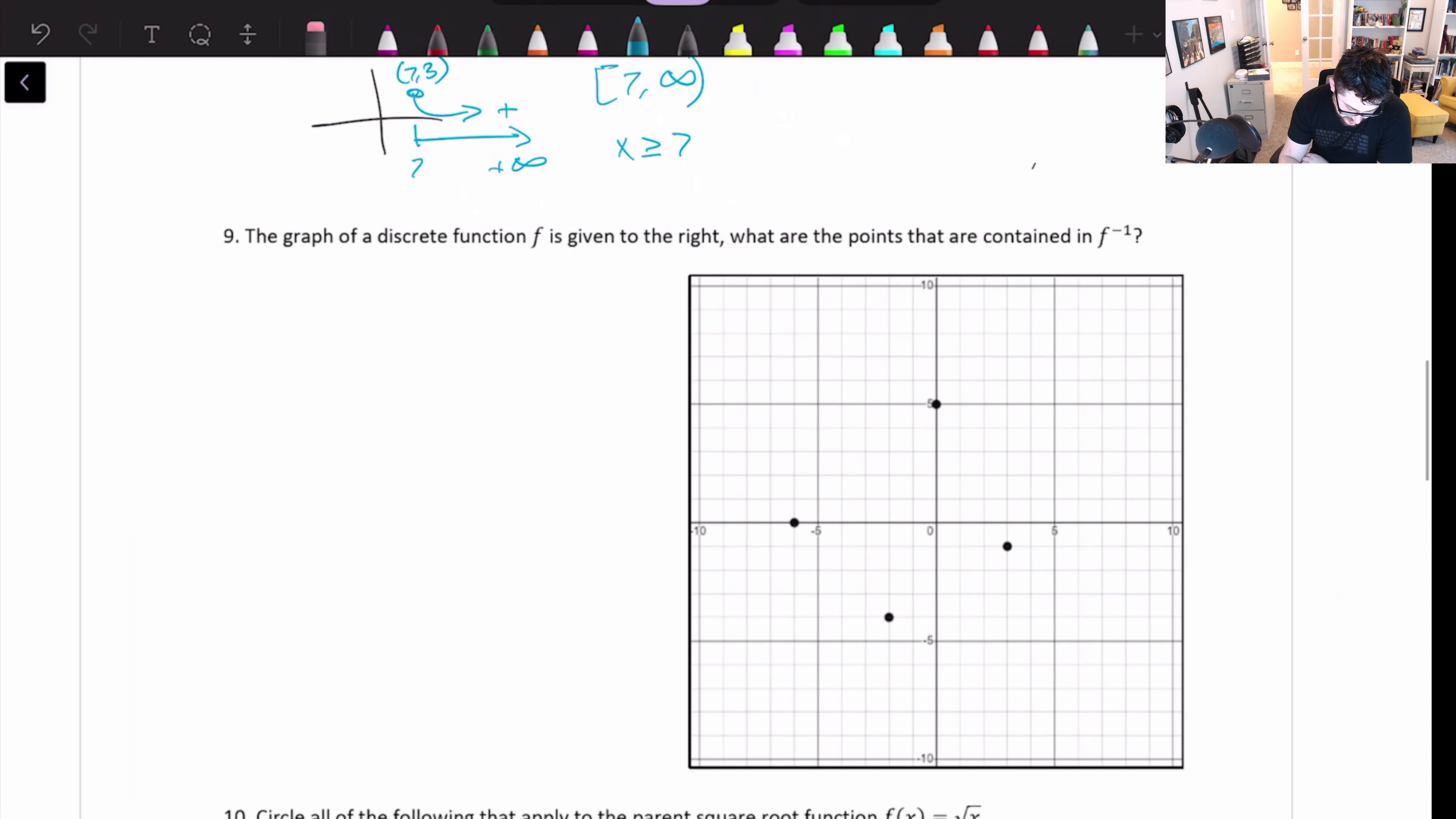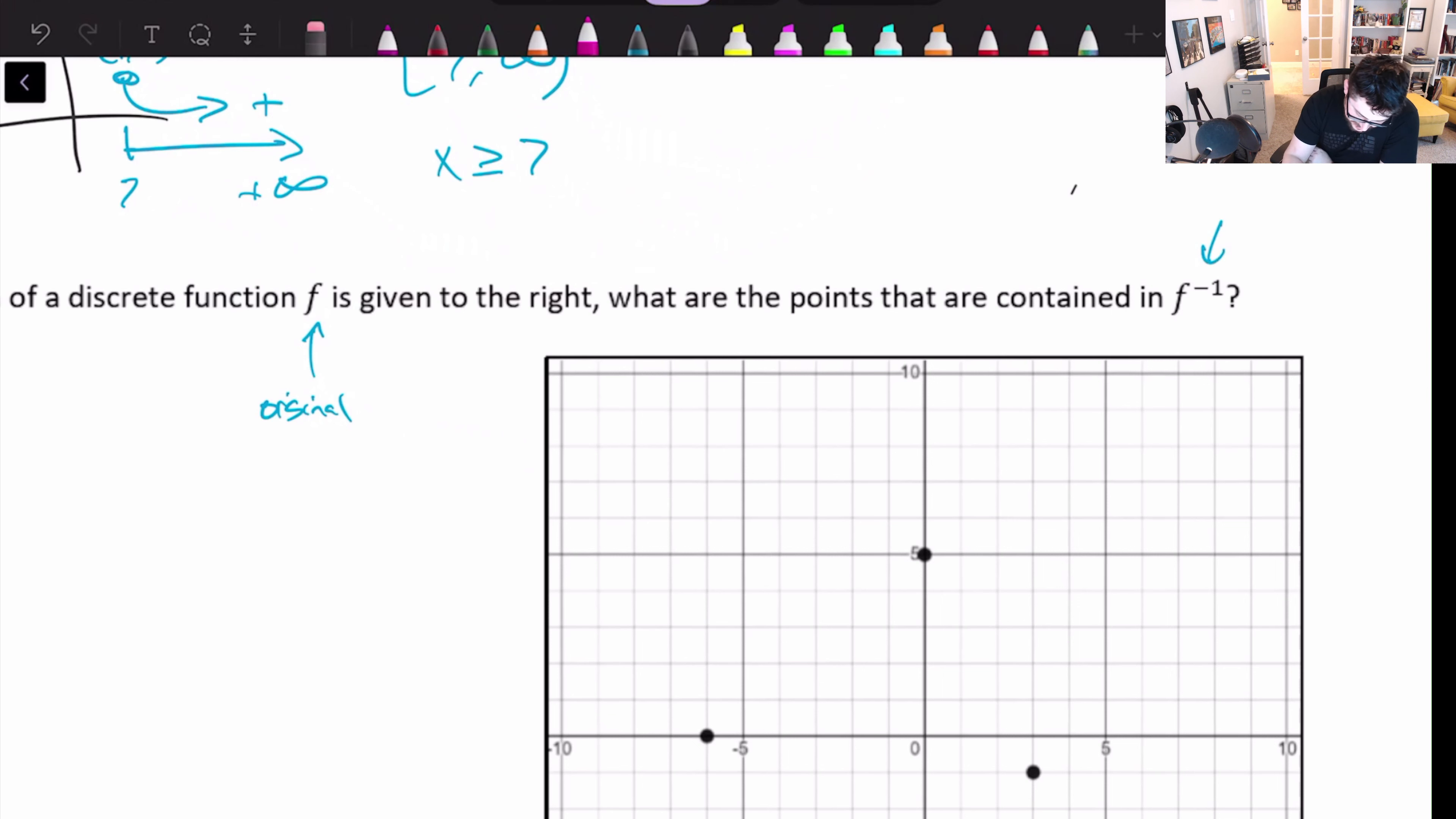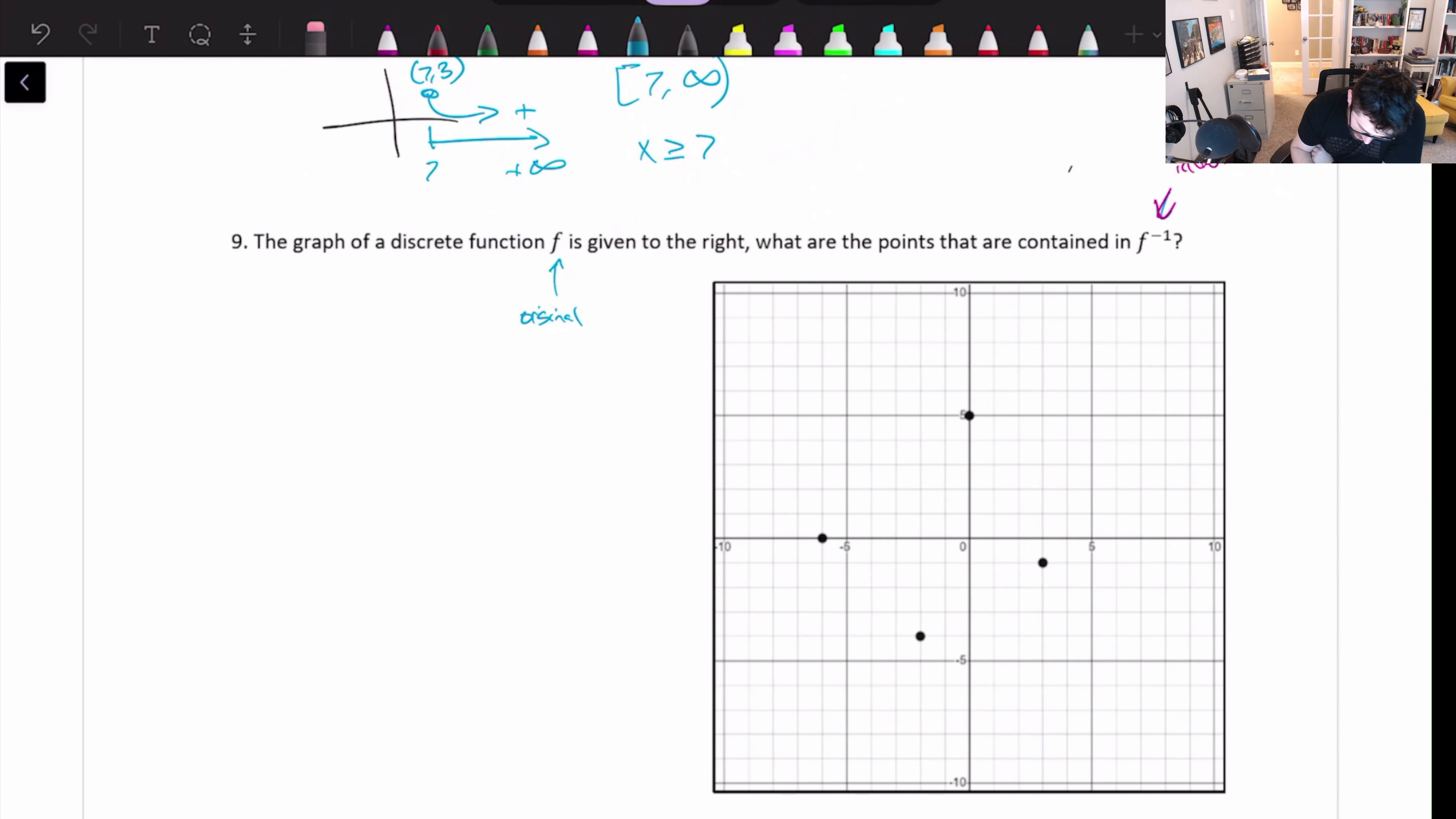So graph of discrete function is right on the right. What are the points that are contained in this stuff? So this function f is the original function. This function f to negative 1 is the inverse. So we're saying, hey, we have these points. What's the inverse? So the original points, like this one is negative 6, 0. And then this one is negative 2, negative 4. And this one is 0, 5. And this one is 3, negative 1. So the inverse of those would be just switch the x and y values. Something kind of like this.